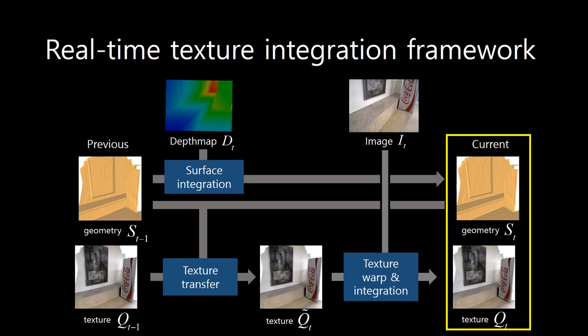Finally, we warp the current image to be aligned with the previous texture map. We then blend the current color image with the previous texture map together, thus updating the current texture map.